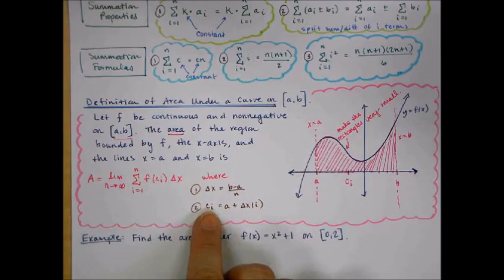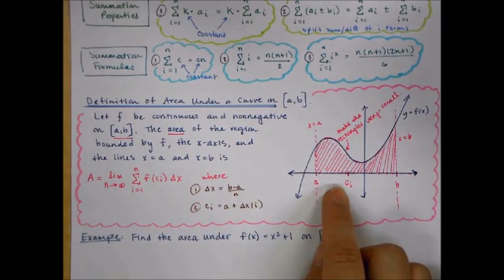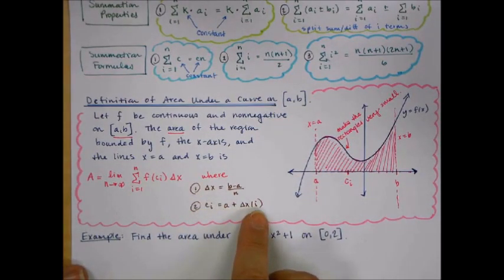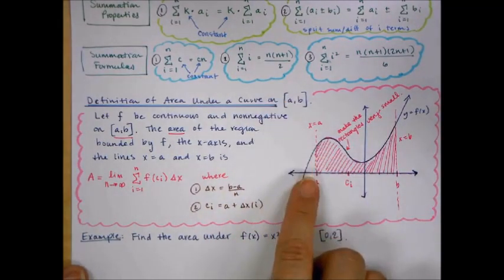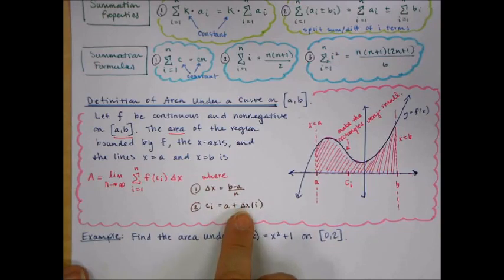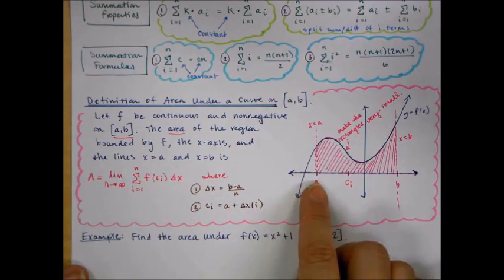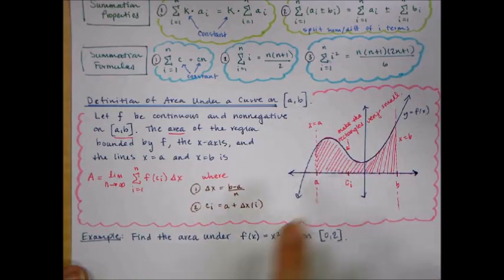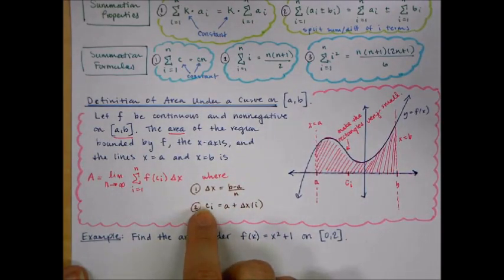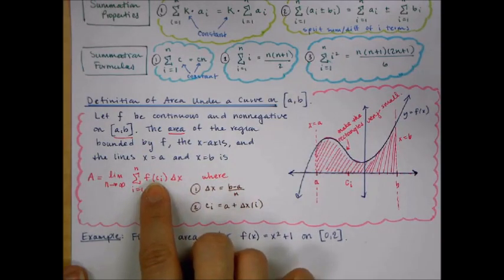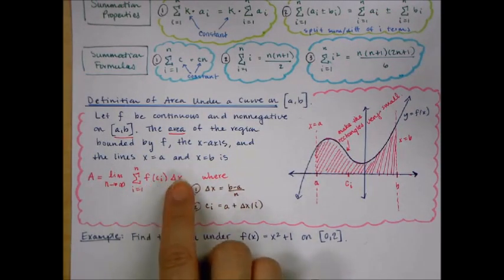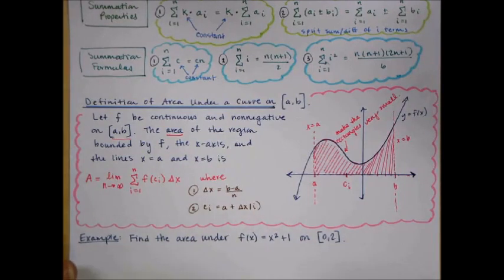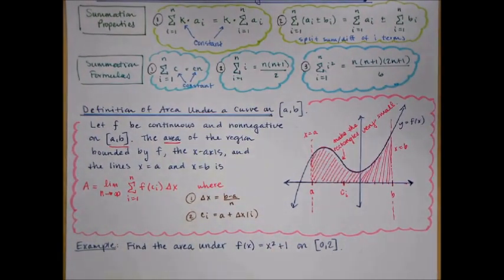C sub i is the x-location of each rectangle, calculated by a plus delta x times i. Starting at a and adding on one rectangle, two rectangles, three, and so on until you reach the i-th rectangle. By plugging that into the function, you generate its y-value — the height of the rectangle. So it's just width times height. It's all about using the formulas and knowing when to make substitutions — a pattern we'll work out.